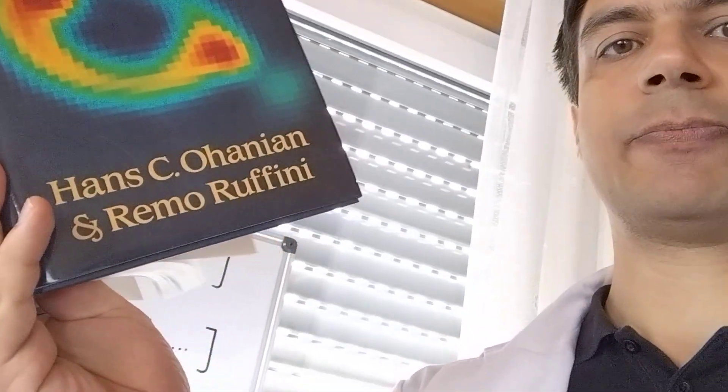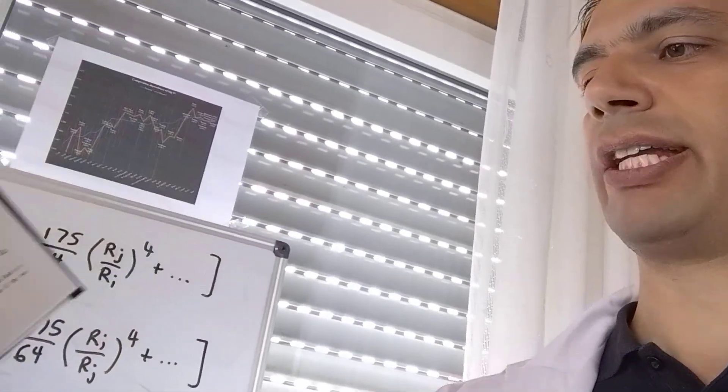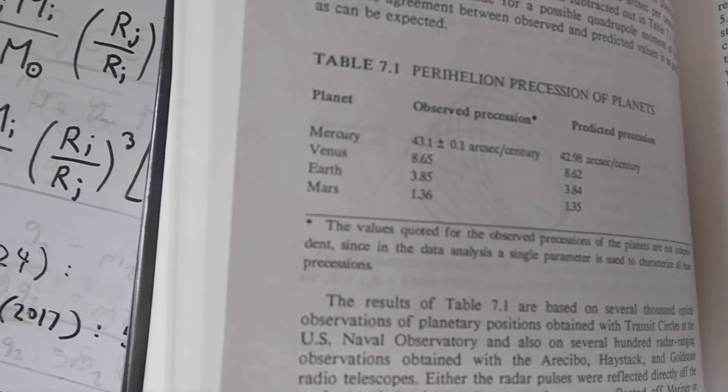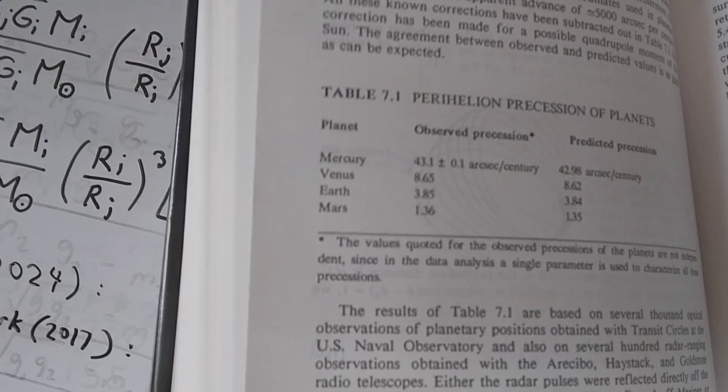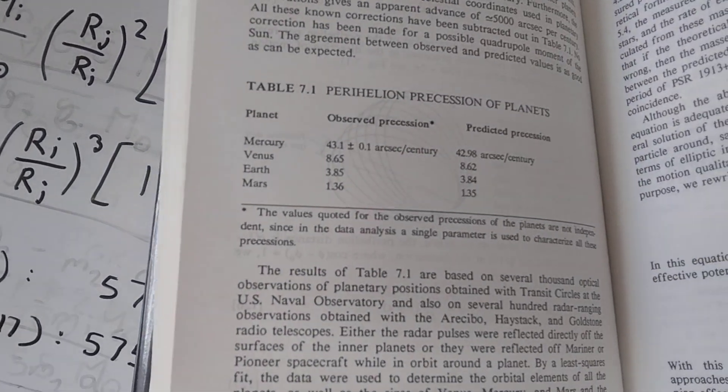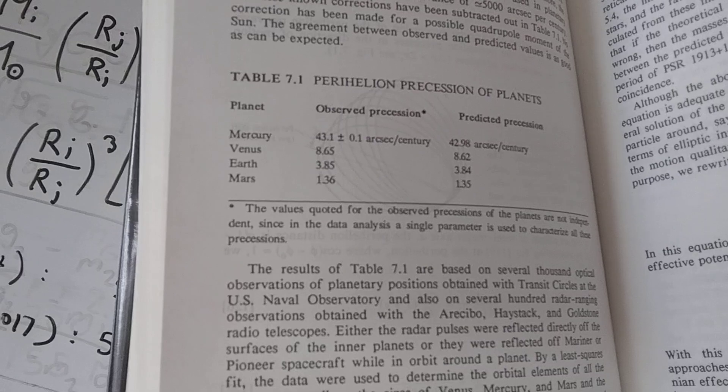But the problem here is that, as you can see from this book by Ohanian, there are only standard deviations for Mercury. And there's a small disclaimer at the bottom saying that the values quoted for the observed precession of the planets are not independent, since in the data analysis, a single parameter is used to characterize all of these precessions.